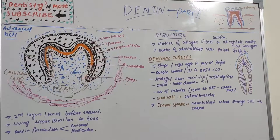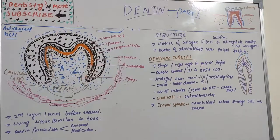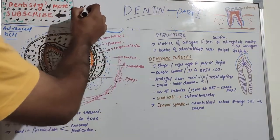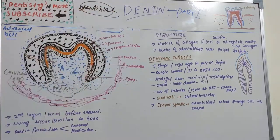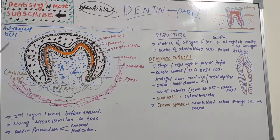Dentine is a hard structure of the tooth, just like enamel, which it physically and chemically closely resembles bone. It is said to be a living tissue, whereas enamel is not a living tissue. Dentine is a living tissue since the tubules present in it contain processes of specialized cells which are odontoblasts.